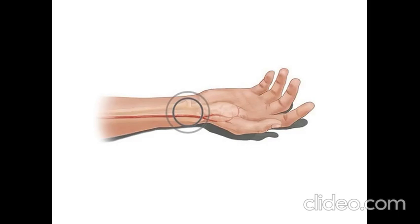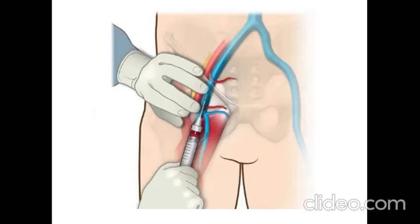A right radial artery access was obtained for arterial angiography. Similarly, a right femoral venous access was obtained.